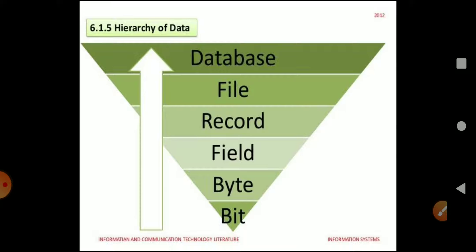What is a field? A single piece of information is known as a field. What is a record? A complete set of fields is known as a record. What is a file? A file is a group of records used to provide complete information. What is a database? A database is a place where we usually keep our information.